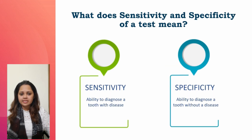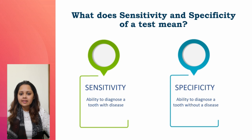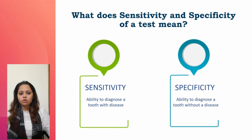Sensitivity is the ability of a test to diagnose a tooth with disease, that is a non-vital tooth, while specificity diagnoses a tooth without disease, which is vital. Heat test has higher sensitivity while cold test has higher specificity. This means that heat test has higher chances of diagnosing a non-vital tooth, while cold test has higher chances of diagnosing a vital tooth. No single test will ever give us the accurate status of the pulp; it must be used as an adjunct to clinical and radiographic examination.